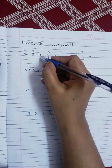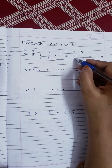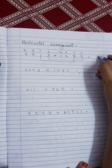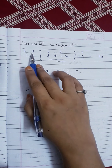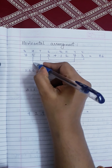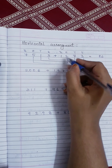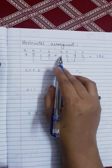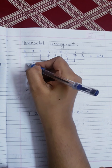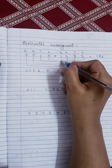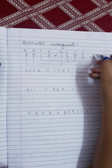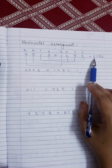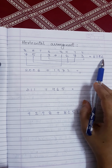The tens digit: one plus seven is eight. Now we add hundred to hundred: five plus two is seven. And seven plus one — both numbers are at the thousandths place — so seven plus one is eight. So the addition of both these numbers is eight thousand seven hundred and eighty-six.